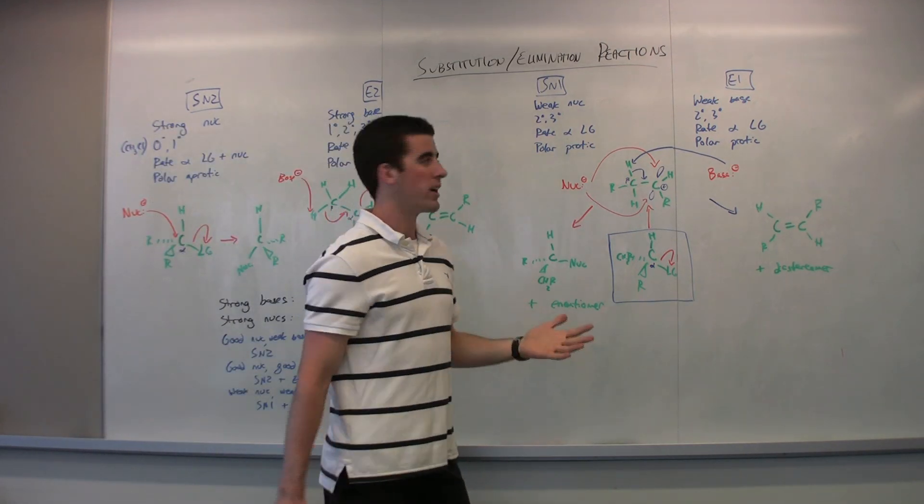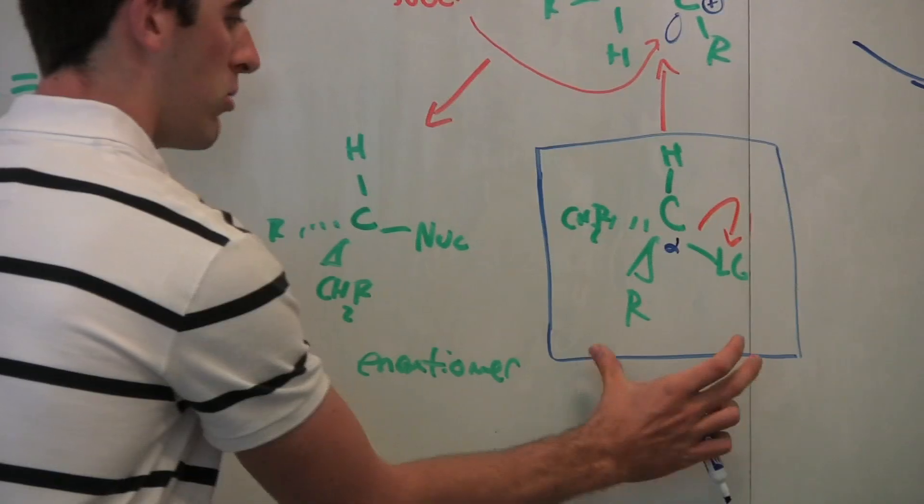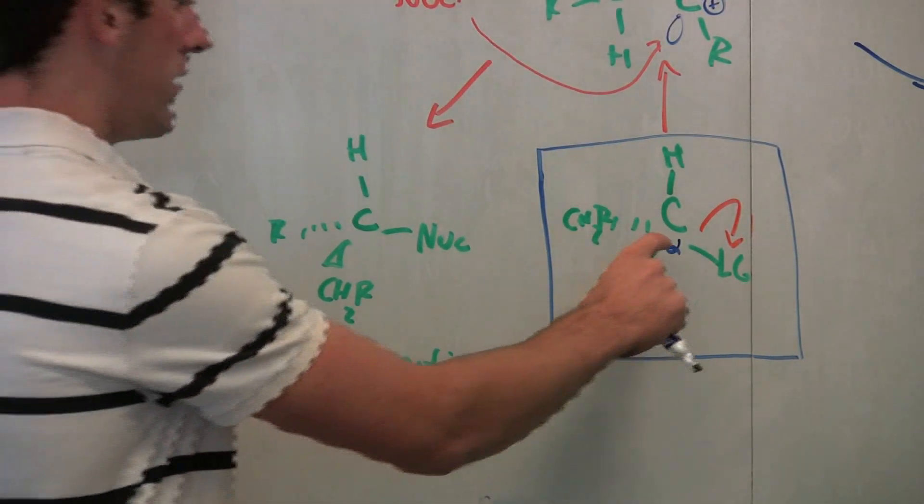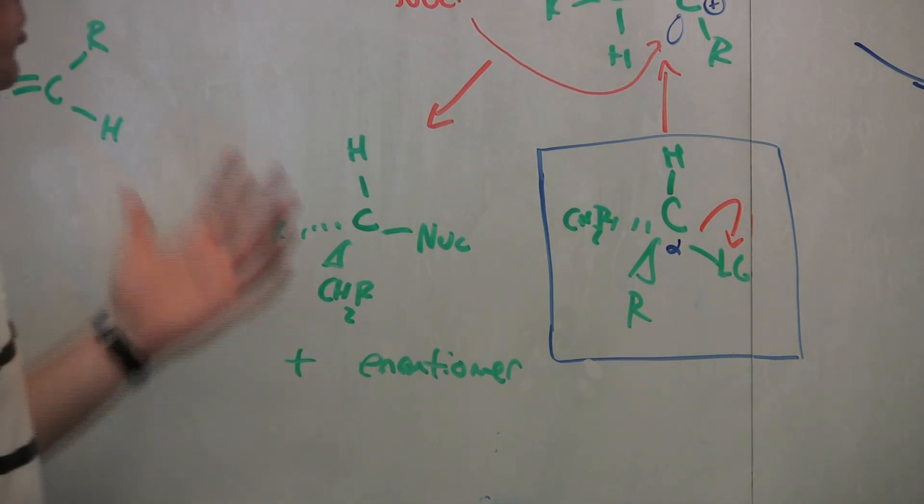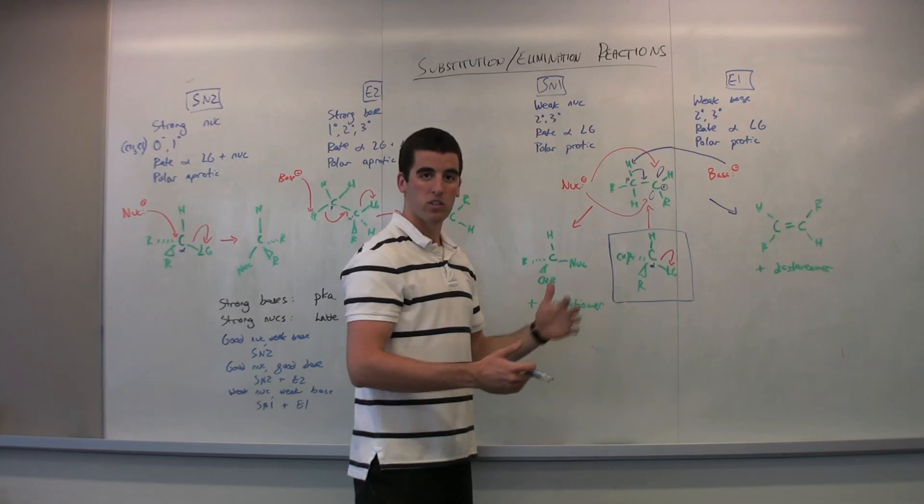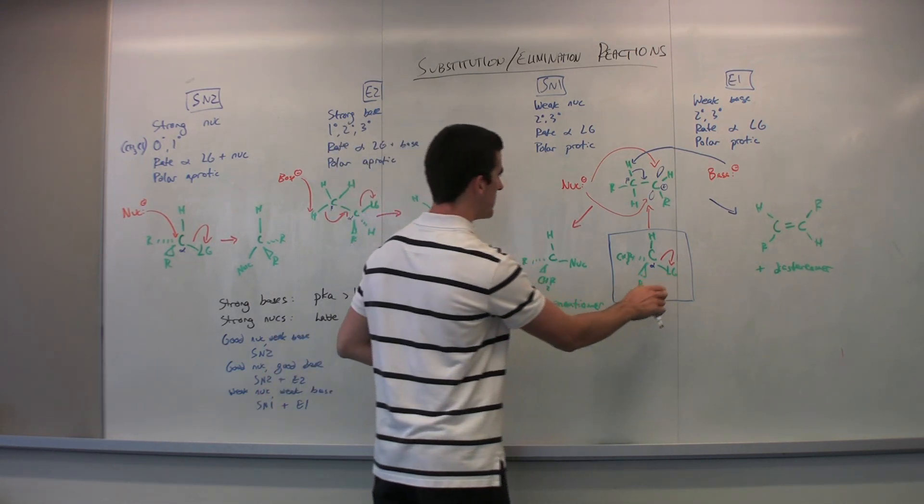So these two are the unimolecular reactions. You're going to have a two-step process. The first step is always this one, the box step here. The leaving group leaves. And that may be due to weak conditions, a weak nucleophile, and a weak base, because the leaving group just leaves, doesn't have time to sit around and wait for something to happen.